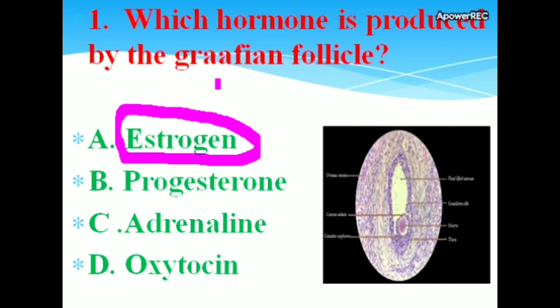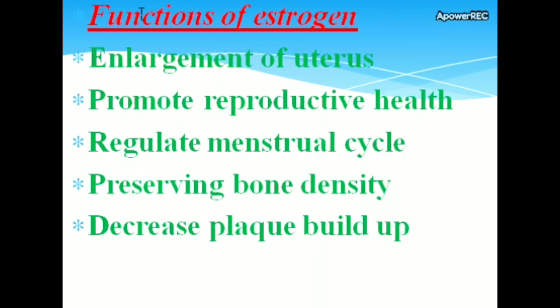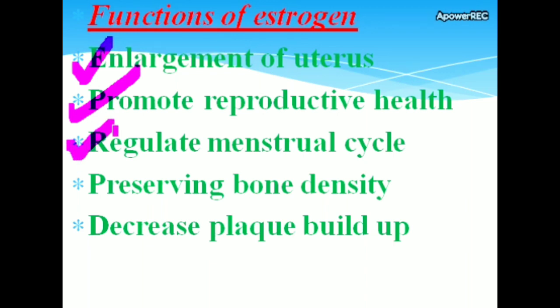The Graafian follicle is a fluid-filled sac structure in the ovary. Functions of estrogen include: enlargement of uterus, promoting reproductive health, regulating the menstrual cycle, preserving bone density, and decreasing plaque buildup.